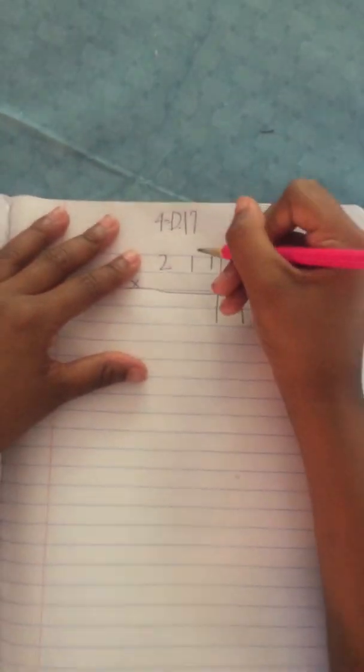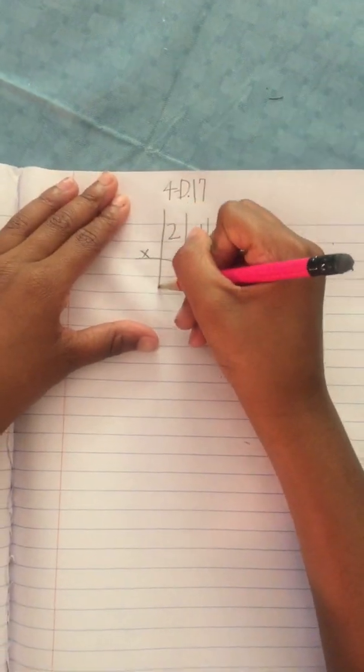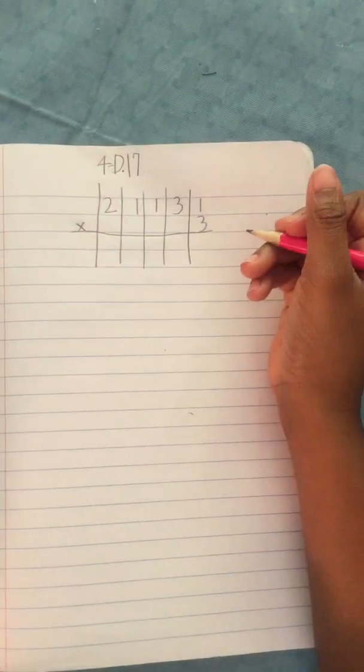Now that I have written down my problem, I will draw lines to separate my numbers. And now I'll draw boxes underneath them.